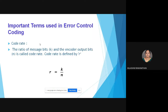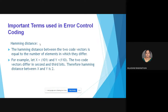Code rate is the ratio of message bits to encoder output bits, defined as r = k/n. The Hamming distance between two code vectors is equal to the number of elements in which they differ. For example, if x = 101 and y = 110, these two codes differ only in the second and third bits. Therefore, the Hamming distance between x and y is 2.